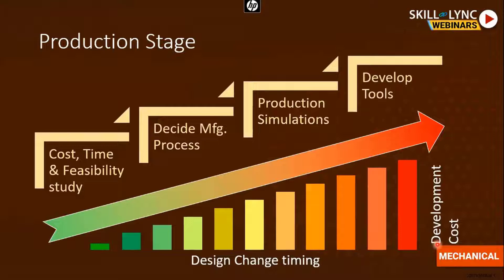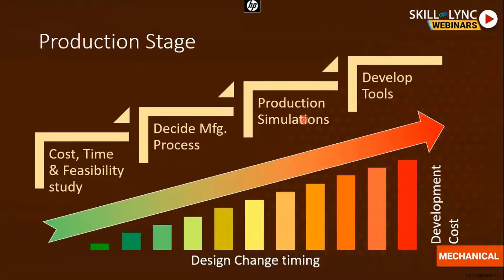Finally, it comes to the production stage. Starting from the concept stage, proceeding through design and development, and arriving at production. The production stage is controlled by cost, time, and feasibility — not every design or imagination can be made into a product, as there are many limitations. Based on this cost-time-feasibility study, the manufacturing process for each part is decided and production simulations are made — both physically and digitally using FEA — after which the actual tools for producing the part are developed.